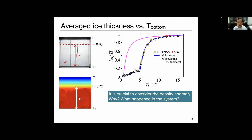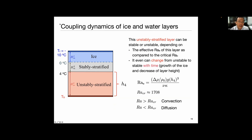The system involves quite complex coupled dynamics between the ice layer and the water layer. The water layer is not a single layer - at the ice-water interface you have zero degrees, and there is a 4-degree isotherm in between. Between the zero and 4-degree lines, you have a stably stratified layer. Below the 4-degree line, you may get an unstably stratified layer. We define an effective Rayleigh number for this unstable layer: if it exceeds a critical value, you get convective motion; otherwise diffusion. As ice grows, this layer shrinks and can transition from convection to diffusion.